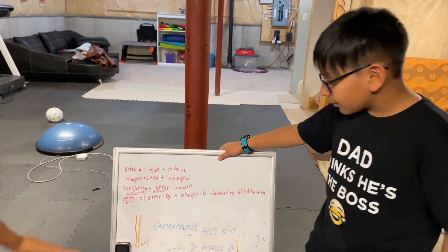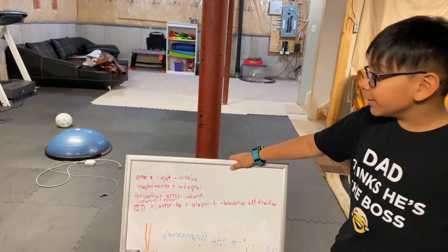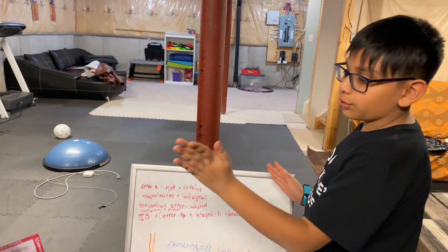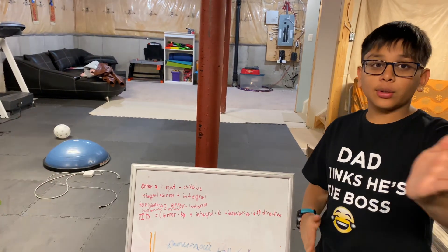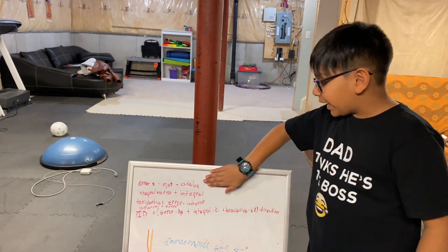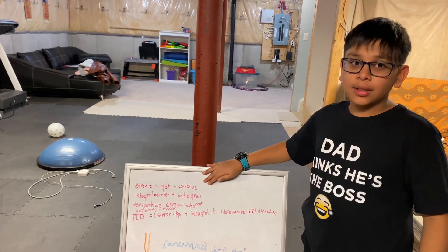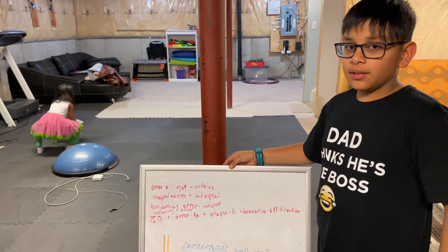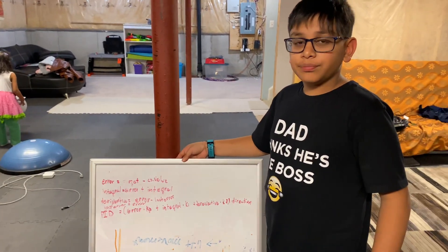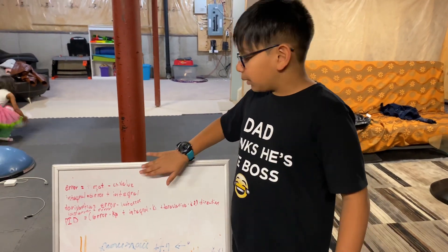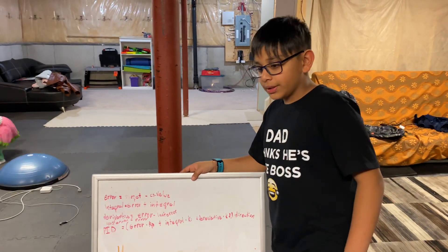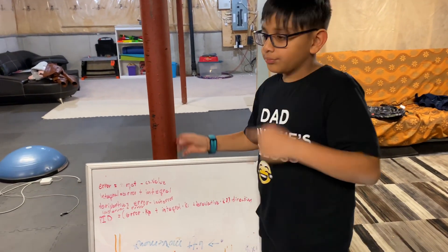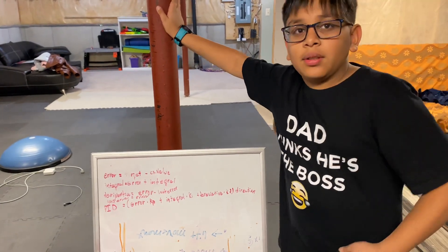Why do we calculate error? If we're three degrees off the line, we need to turn back onto the line. The error tells us how much we need to correct. The error is the most important one because we decide how much we want to come back. The proportional term is the most used because we multiply the error by a proportional value.